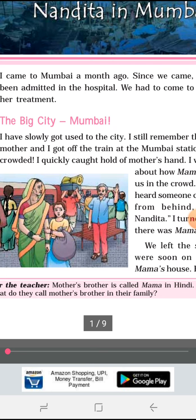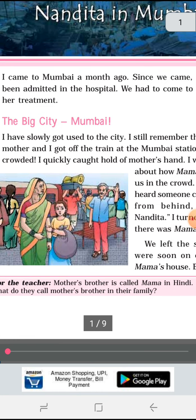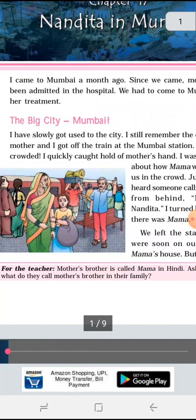When she got down from the train, she noticed that there was a huge mob — it was overcrowded. The Mumbai railway station, the busy platform — she is explaining that it was all rush here and there, but fortunately they found Mama, and Mama took them to his home. On the way, Nandita saw huge tall skyscrapers, the buildings and the traffic of Mumbai.